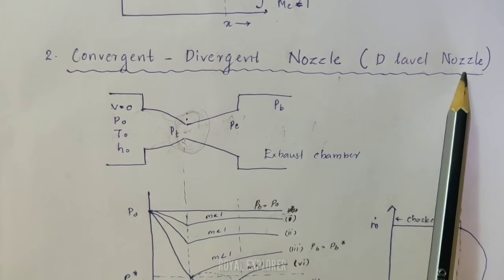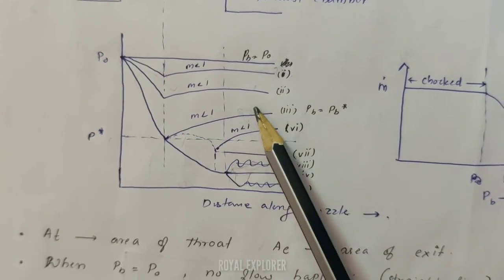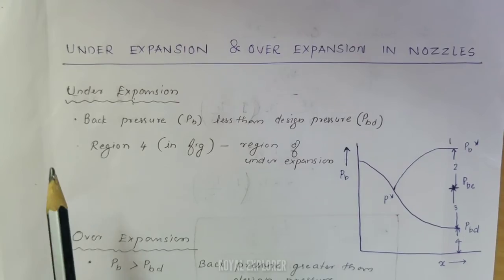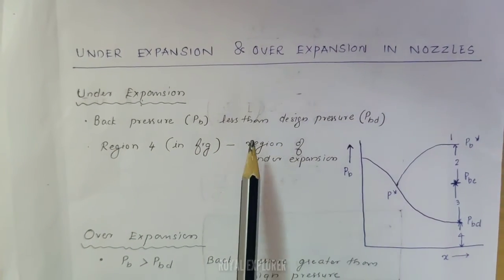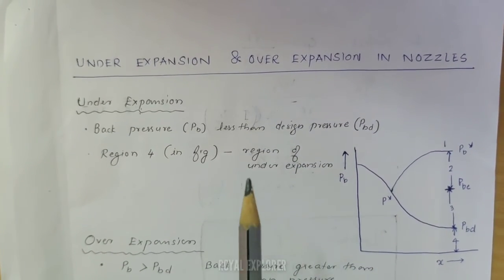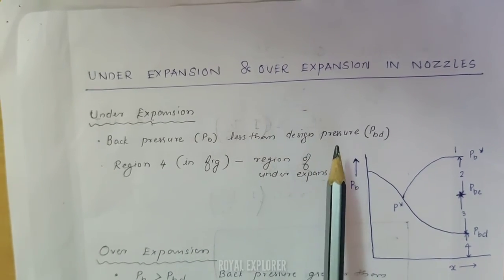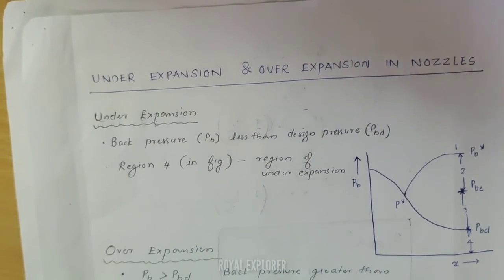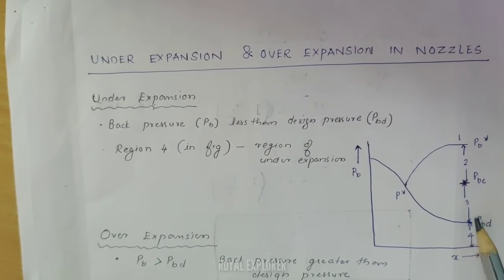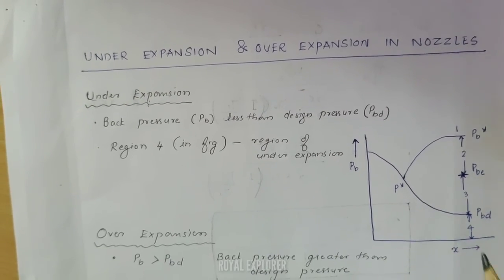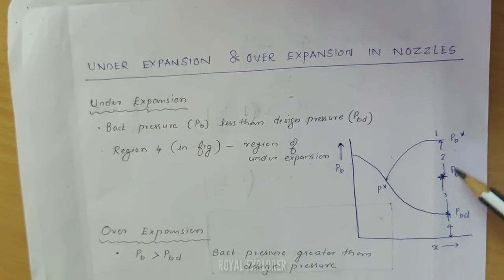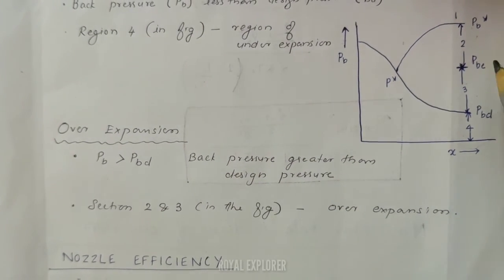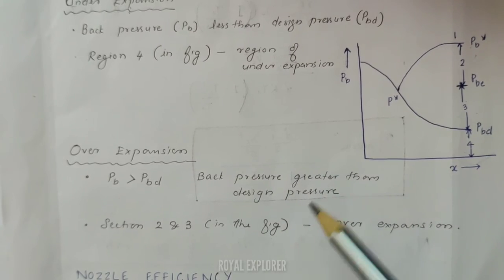The under-expansion and over-expansion cases are described by different curves on the pressure graph. In the under-expansion case, the back pressure is lower than the exit pressure. In the over-expansion region, the back pressure is too low, causing shock waves. These represent the under-expansion and over-expansion flow conditions for the nozzle.